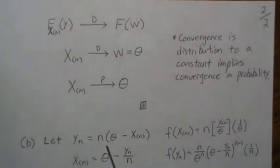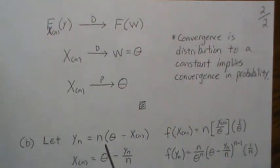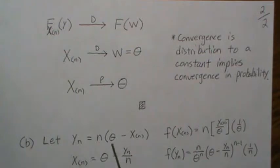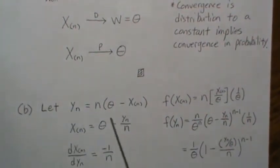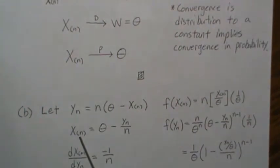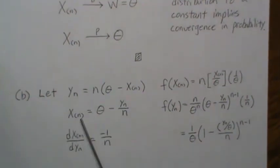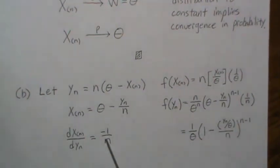Now let's look at what this distribution converges to. So we want to let y_n be this quantity here. Now, as a reminder, the density for x, the nth order statistic is this. So now what we need to do is back solve for x_n. And we get this. Take the derivative of this with respect to y_n. We get minus this.